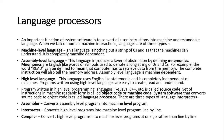Then there is assembly language. Assembly language introduces a layer of abstraction by defining mnemonics. Mnemonics are English-like words or symbols used to denote a long string of zeros and ones. Then there are high-level languages, which are English-like segments mostly used in modern programming languages.